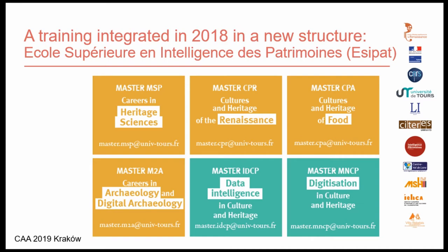This structure puts together two different Master degrees: one entitled Histoire, Civilisation, Patrimoine — so History, Civilisation and Heritage — and the other entitled Digital Humanities. The first Master corresponds to the blocks shown in yellow. Four different courses are offered to students: firstly a course in Heritage, Renaissance Studies, Food Studies, and our Master in Archaeology and Digital Archaeology, which I'm going to talk more about now.